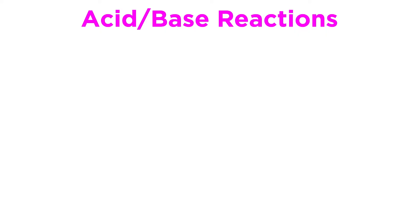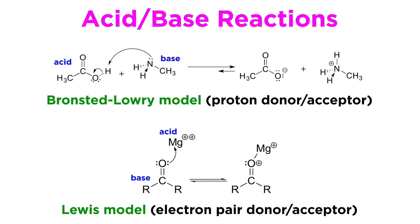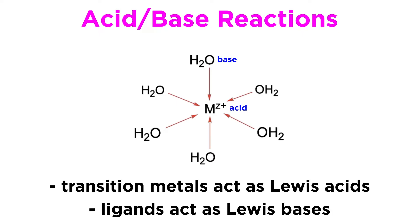We certainly will recall acid-base reactions from our study of general chemistry, and we are certainly aware of the Brønsted–Lowry definition for acidity and basicity that deals with proton exchange. But we should also remember the Lewis model of acidity and basicity, where a Lewis base is an electron pair donor and a Lewis acid is an electron pair acceptor. This definition will be relevant for us because transition metal centers often act as Lewis acids, and ligands act as Lewis bases when they coordinate to the metal centers. So in the context of this tutorial, when we talk about acids, we are referring to transition metal ions, and bases will be the ligands that coordinate to them.